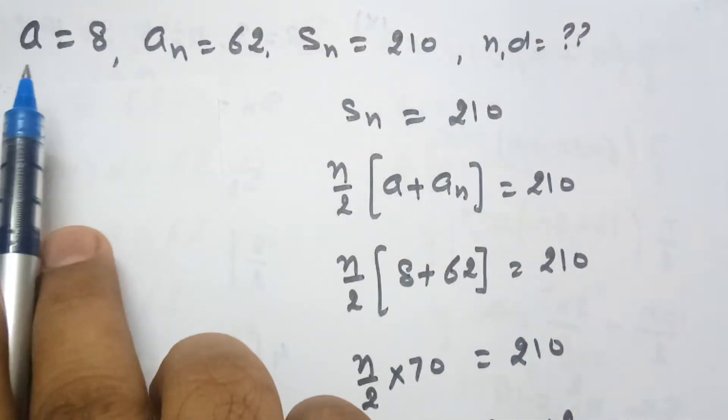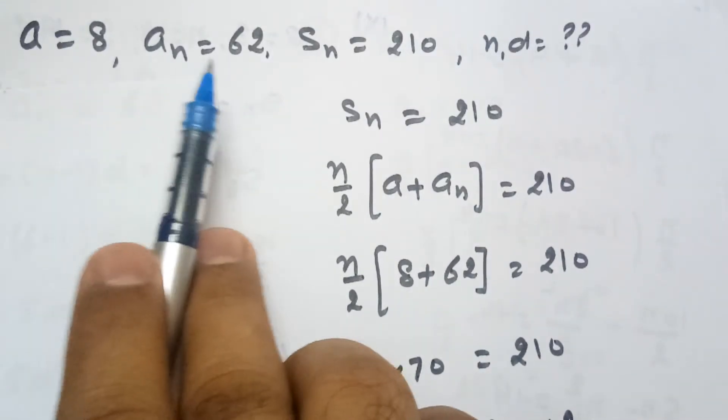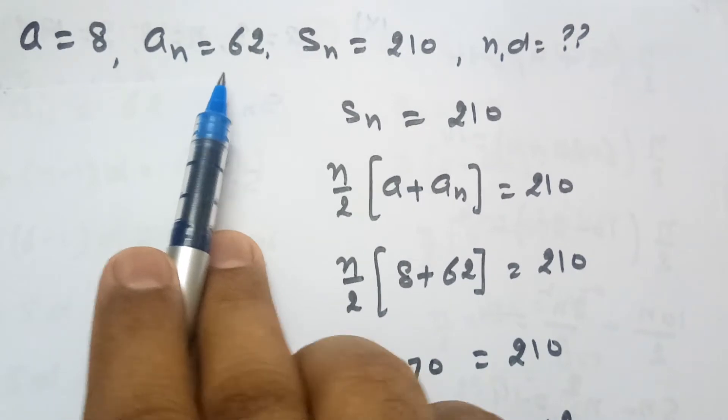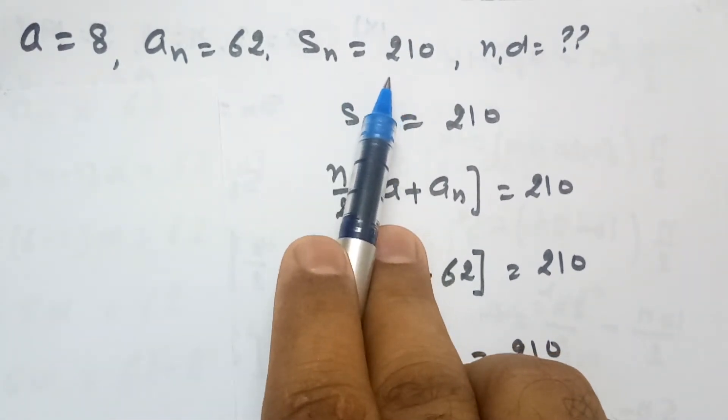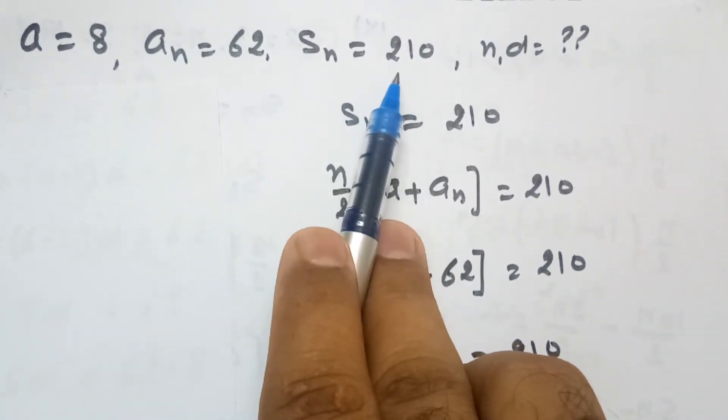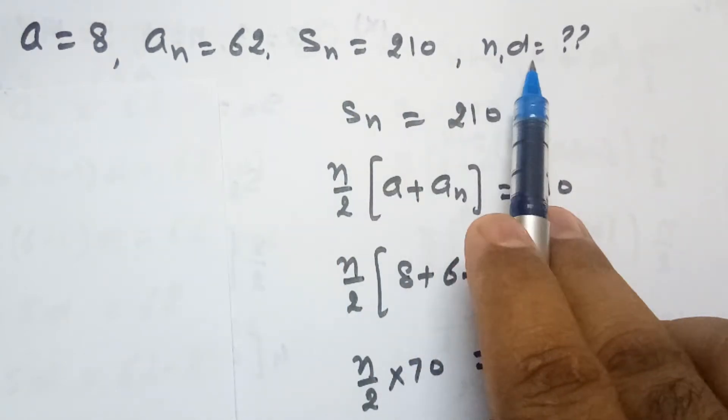Here in this question it is given that first term of AP is 8, last term of AP is 62 and sum of all the N terms is 210. Find the number of terms and common difference.